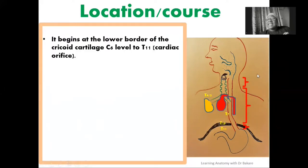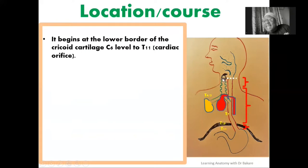The oesophagus begins at the lower border of the cricoid cartilage, highlighted in white. The cricoid cartilage is a ring-shaped cartilage seen at the inferior border of the larynx. The inferior border of this cricoid cartilage marks the beginning or origin of the oesophagus. This tallies with the sixth cervical vertebra level, so the oesophagus originates at C6 and descends downward.